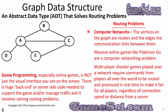For computer networks, vertices are routers and edges are communication links. Massive online games like Pokémon Go are a computer networking problem. Multiplayer shooter games require commands from players worldwide to be routed and processed in real-time to be fair for all players, regardless of connection speed or distance from the server. There is a huge back-end or server-side code needed to support the game and manage traffic, which involves solving routing problems.